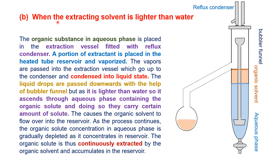The second case is when the extracting solvent is lighter than water. The organic substance in the aqueous phase is placed in an extraction vessel fitted with a reflux condenser. The aqueous phase containing the organic solute is placed in it, along with the immiscible organic solvent. A portion of this organic solvent is placed in a heating reservoir. When heated, it vaporizes, and the vapors move toward the extraction vessel and upward toward the condenser.